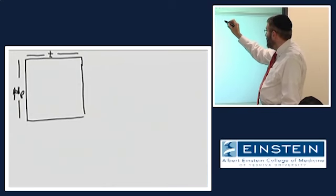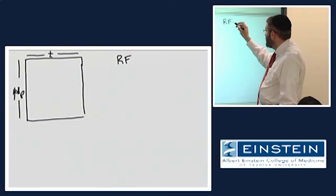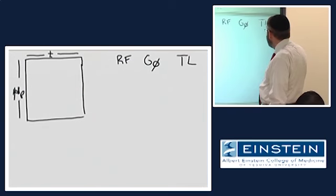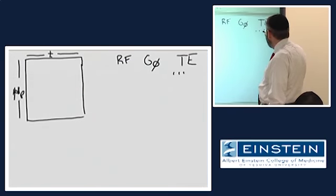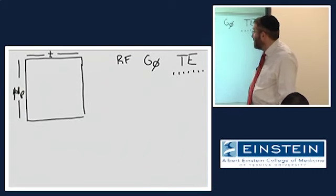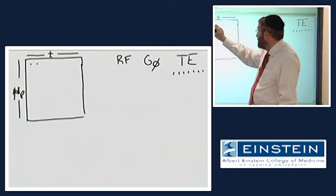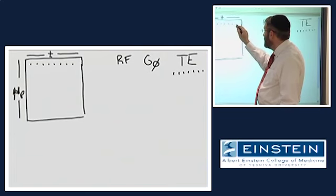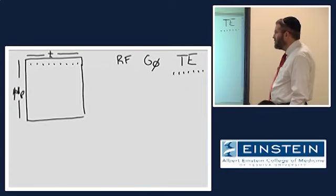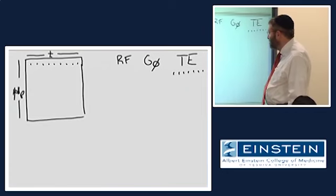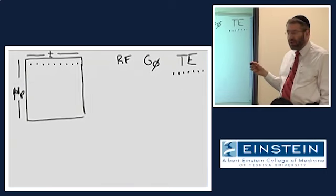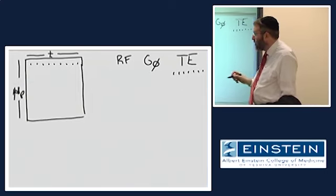If we look at what's going on in our imaging: we have our RF which excites the spins, we turn on the phase encoding gradient, and then at TE we sample the signal multiple times. Those signals get sampled from left to right. When we sample the signal, at least for imaging, we are sampling what we call an echo.